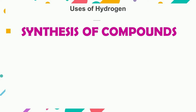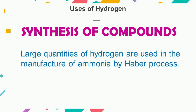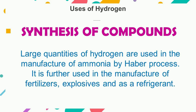Hydrogen is also used for the synthesis of compounds. For example, large quantities of hydrogen are used in the manufacture of ammonia by Haber's process. This ammonia is further used in the manufacture of fertilizers, explosives, and as a refrigerant.